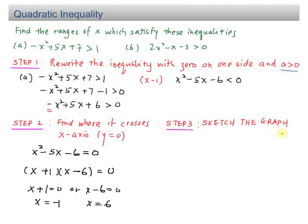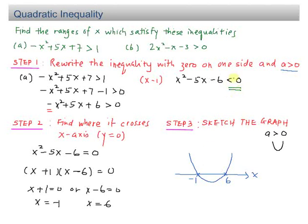Step 3: sketch the graph to get the answer. For a quadratic with a positive coefficient, the graph is a U-shape. It crosses the x-axis at negative 1 and 6 — always place the smaller number on the left. Looking back at the inequality sign, we need less than 0, so shade the lower part of the x-axis. The final answer is negative 1 less than x less than 6.